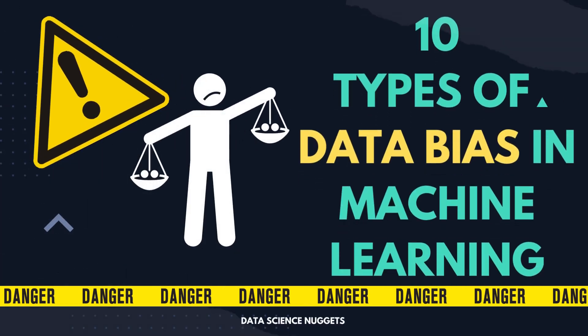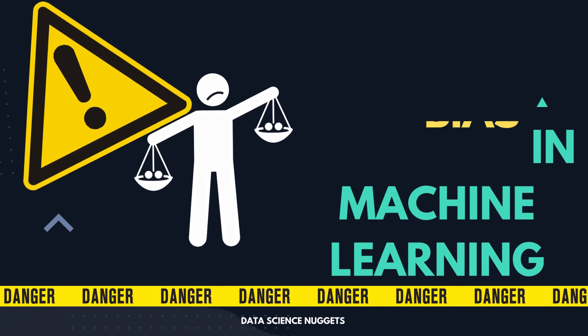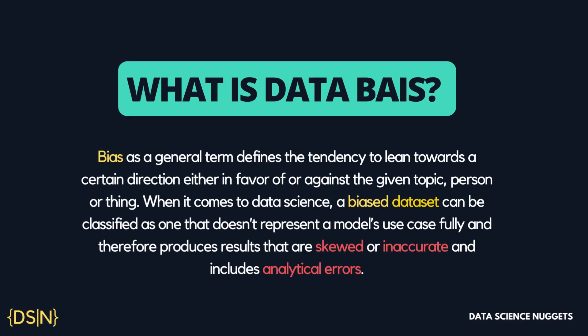Hi everyone, welcome to our channel Data Science Nuggets. In today's video we will be discussing the top 10 types of data bias in machine learning, starting with the most important and basic question: what is data bias? Bias as a general term defines the tendency to lean towards a certain direction, either in favor or against a given topic, person, or thing. In data science, a biased dataset can be classified as one that doesn't represent a model's use case fully, and therefore produces results that are skewed or inaccurate, including analytical errors.